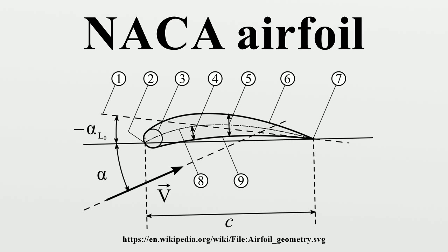Note that in this equation, at X equals 1, the thickness is not quite 0. If a zero-thickness trailing edge is required, for example for computational work, one of the coefficients should be modified such that they sum to 0. Modifying the last coefficient will result in the smallest change to the overall shape of the airfoil.